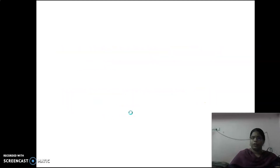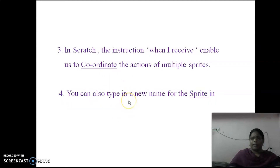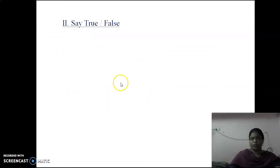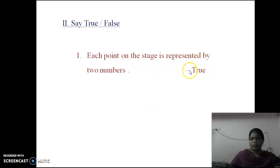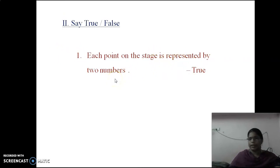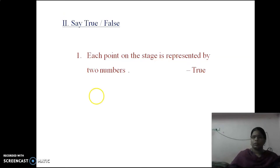Next section: True or False. First question: Each point on the stage is represented by two numbers. The answer is True. Each point on the stage is represented by two numbers — the x-coordinate value and the y-coordinate value — so this is a correct statement.